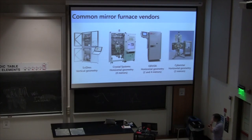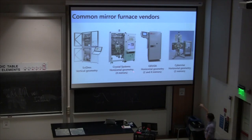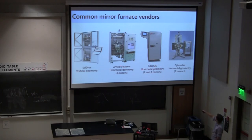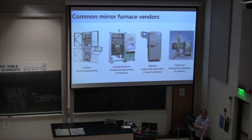Here are some common mirror furnace vendors. Scientific Instruments of Dresden (Sidre) produces vertical geometry furnaces adapted from an old Russian design. Crystal Systems — probably the more common deployment you see nowadays — makes a variety of horizontal geometry furnaces, typically marketing four-mirror furnaces; they're based in Japan. In the U.S., Quantum Design sells both two and four mirror horizontal geometry furnaces. There's a French company, Cyberstar, that sells two-mirror horizontal geometry furnaces. And there used to be NEC, which became Canon, doing two-mirror furnaces — but they don't seem to have a web presence anymore, so I think they may have stopped making them.